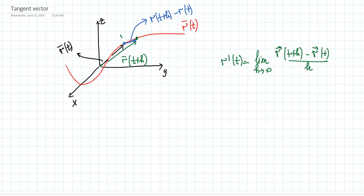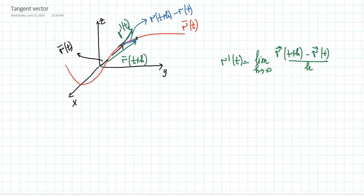So if we take the points closer and closer to each other and divide by h, we get the derivative of the curve at this point. This will look like R prime of t, and we call this vector the tangent vector. The tangent vector is defined as R prime of t.